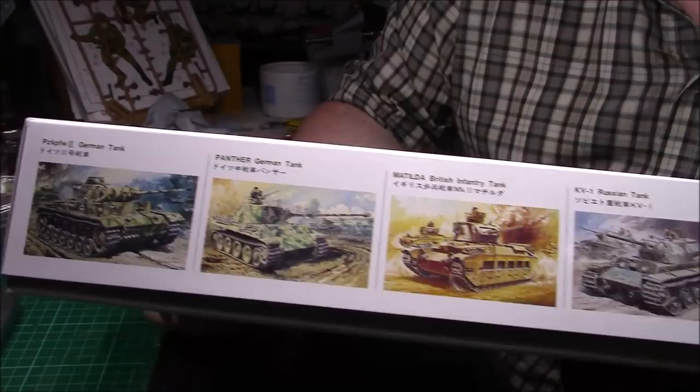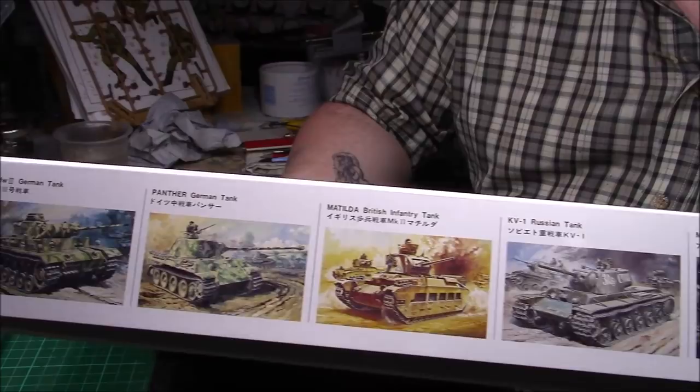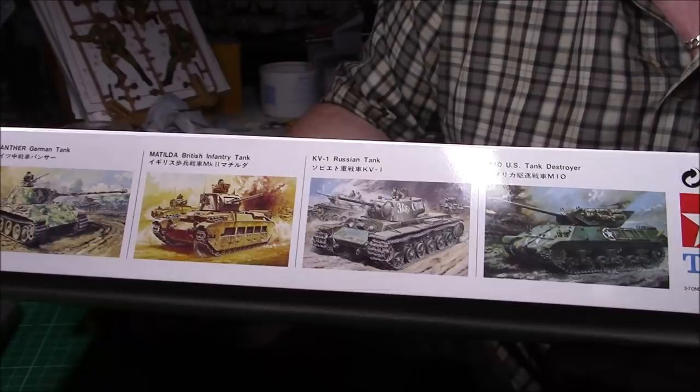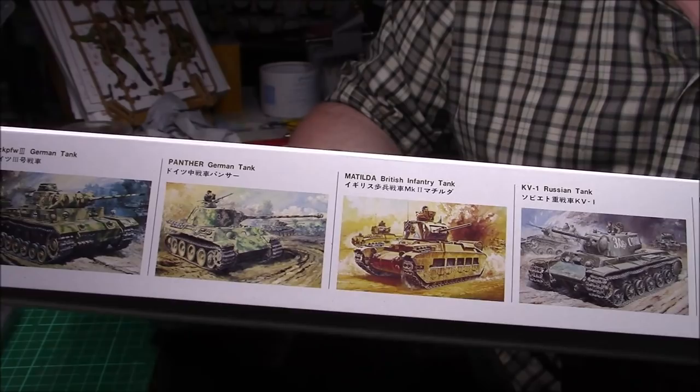On the side, because it's an old kit, they used to advertise their kits in their range. So there we have the Panzer III, the Panther, the Matilda, the Russian KV-1, and the M10 Tank Destroyer. These are the original ones. Obviously a lot of these have been re-released since this was boxed.